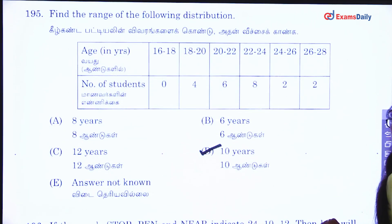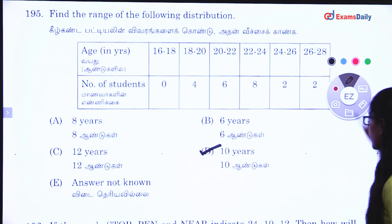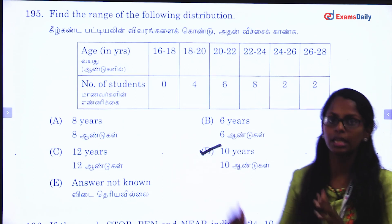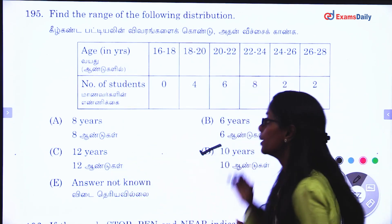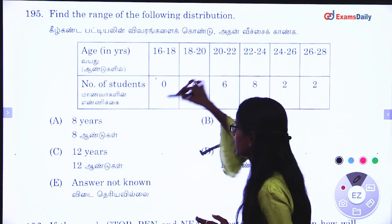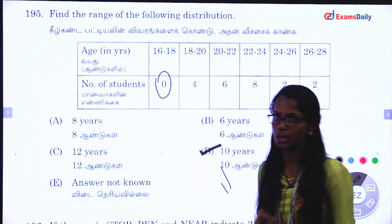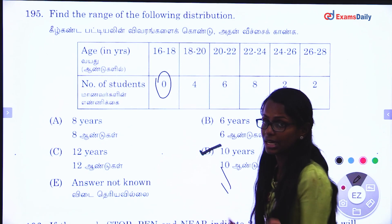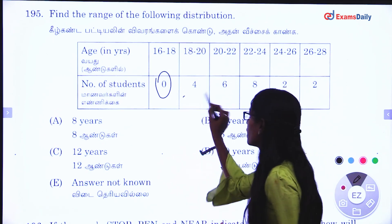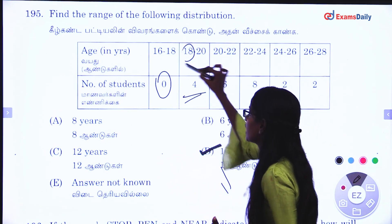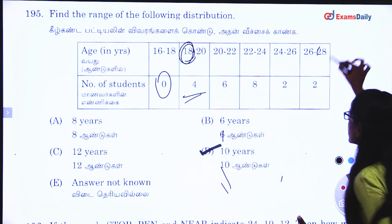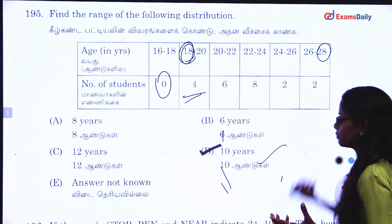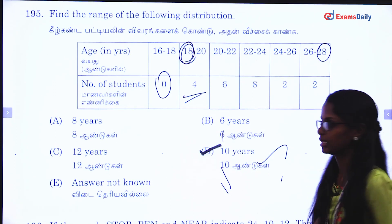Next question — find the range of the following distribution. Range is maximum minus smallest. The smallest is 80, maximum is 28, so range is 28 minus 10 years.